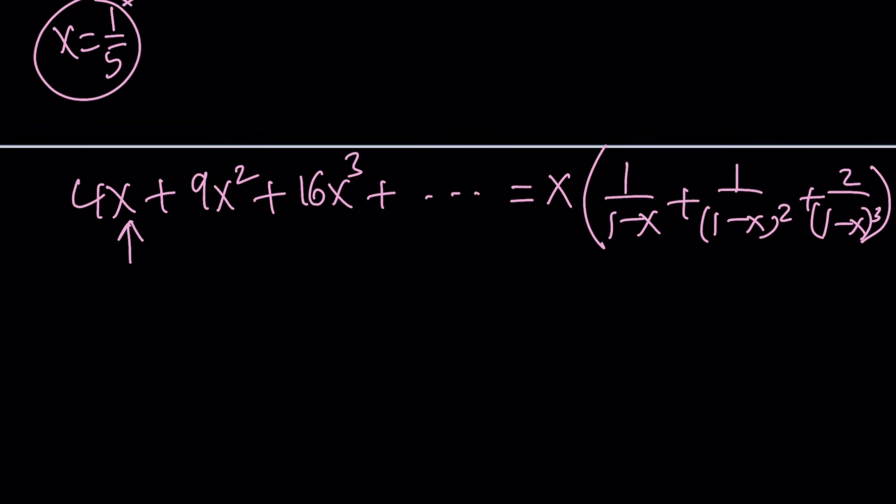Now, I can go ahead and replace x with 1 over 5 because now it's going to work, right? When I replace x with 1 over 5, I'm going to get 4 over 5 plus 9 over 25 plus 16 over 125. Of course, the next term is going to give us 25 over 625, which is going to simplify, but that's okay. You make sure you get the pattern.